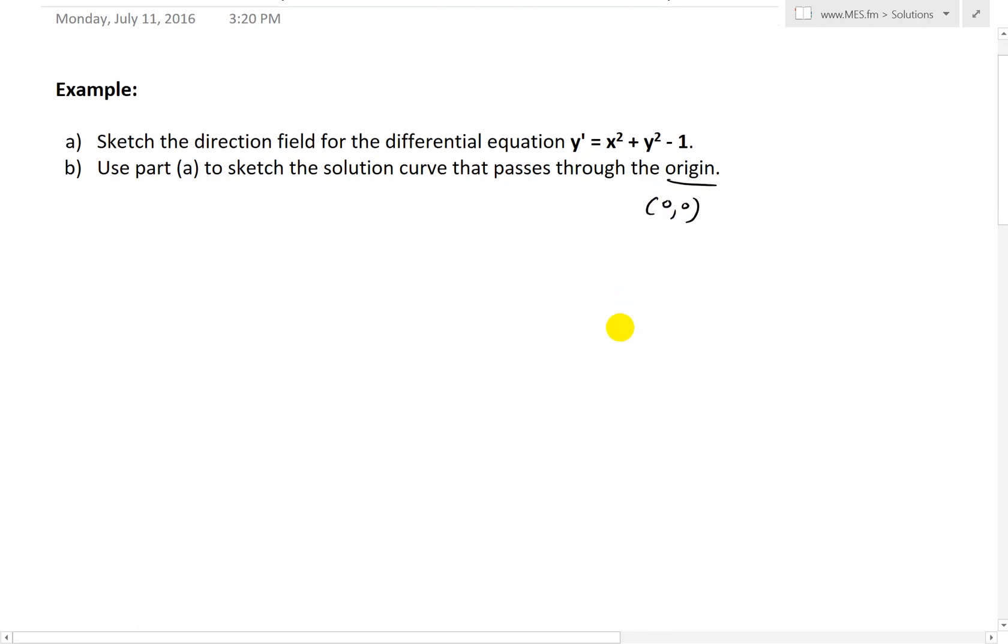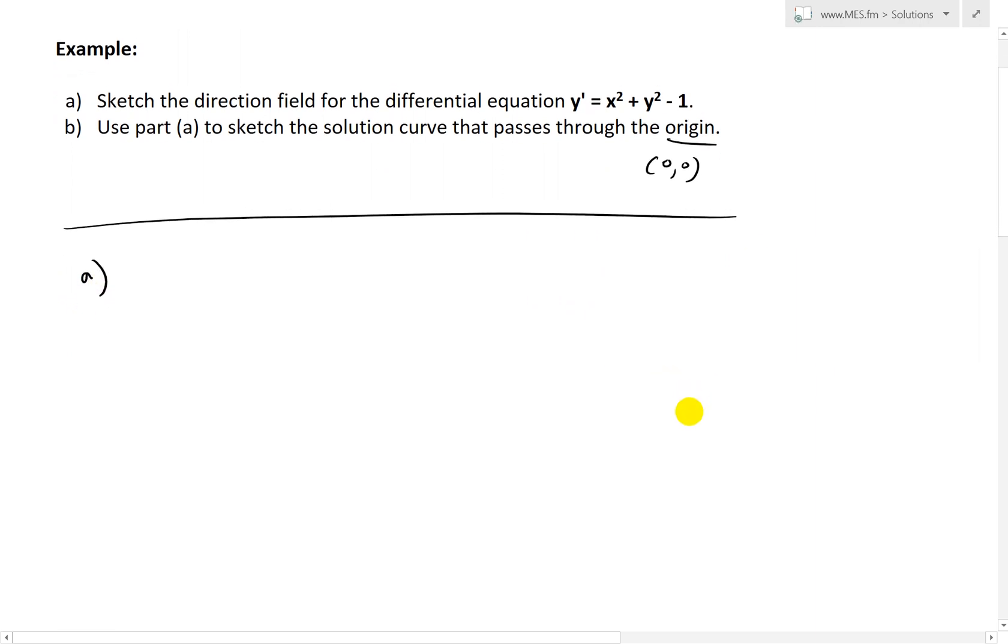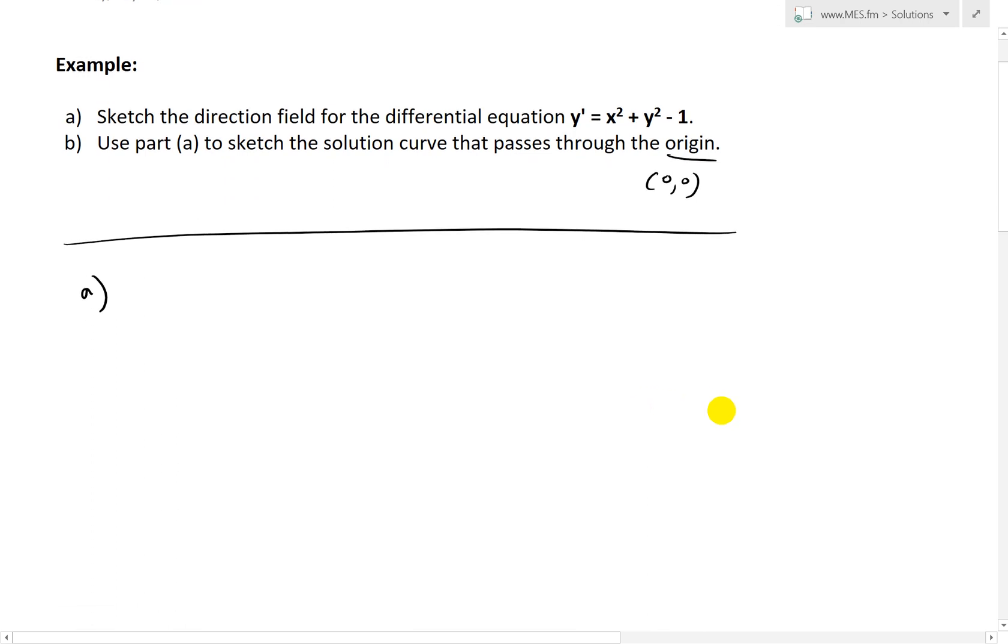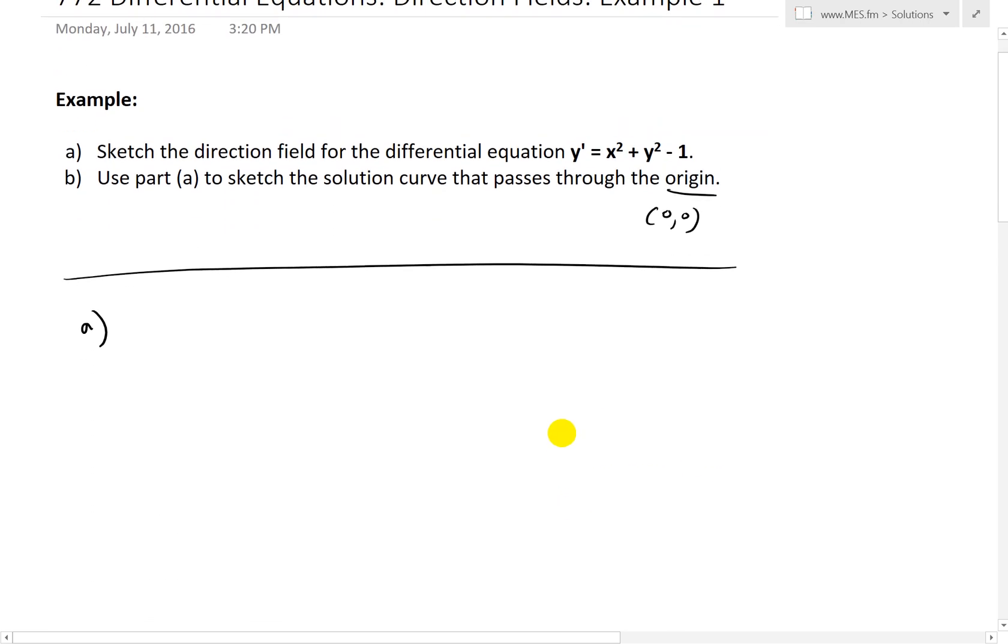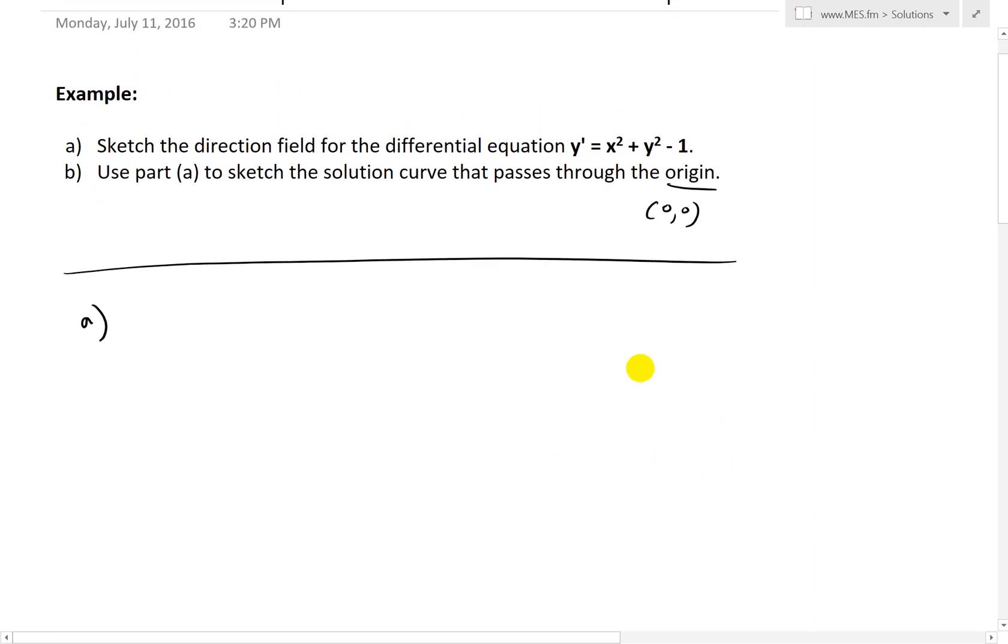So first thing we'll do is recall from my last video: a direction field is just small line segments drawn at many points that basically represent the slope at each of these points. And we can get those slopes from the differential equation.